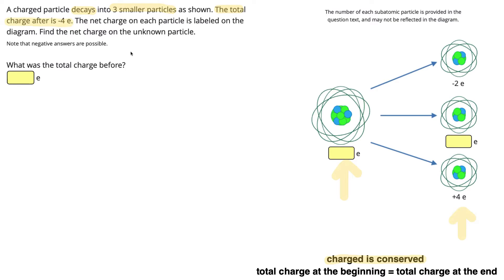e is the unit for elementary charge, which is the charge on a proton or an electron. We need to find the net charge on the unknown particle and the total charge before.